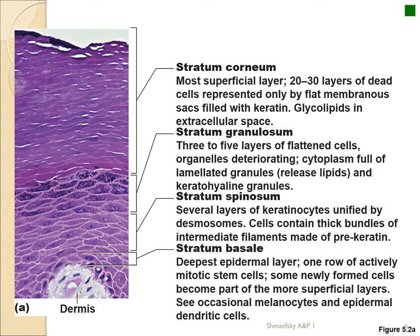We're going to look first at the stratum basale, also called the stratum germinativum. 'Stratum' means layer, 'basale' means the base, and 'germinativum' means this layer produces the whole rest of the epidermis. The stratum basale is a single layer of mitotic stem cells — cells whose main job is just to replicate. These are actually stem cells that don't have a specialized function.